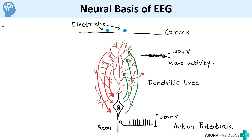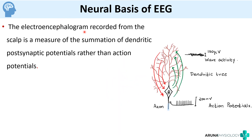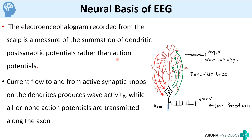So for the exam, you can write it like this: An electroencephalogram recorded from the scalp is a measure of summation of dendritic post-synaptic potentials rather than action potentials. Current flow to and from the active synaptic knobs on the dendrites produces wave activity, while all-or-none action potentials are transmitted along the axon. These two points — that it is the dendritic post-synaptic potentials produced at the dendrites — are what you can write when asked about the neural basis of EEG.